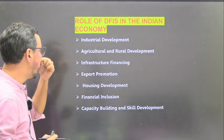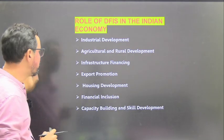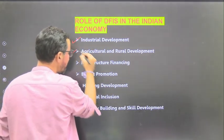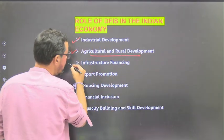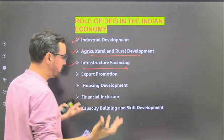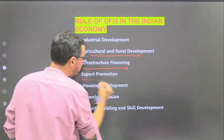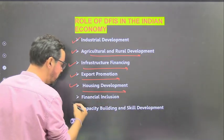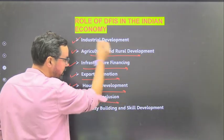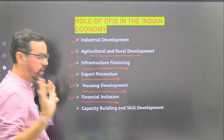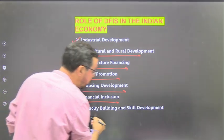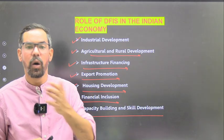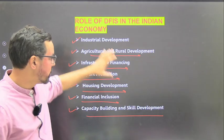The role of DFIs in the Indian economy includes: industrial development - we have many institutions for that; agricultural and rural development; infrastructure financing through NaBFID; export promotion through EXIM Bank; housing development through NHB; financial inclusion - with the help of all these institutions; and capacity building and skill development, even through NABARD and other institutions.